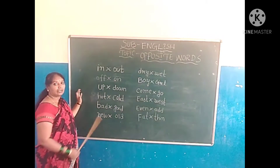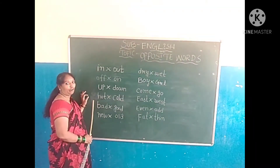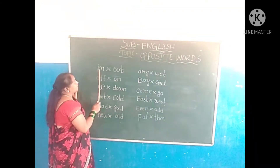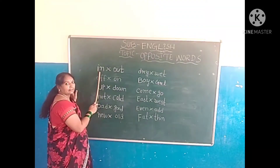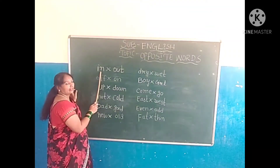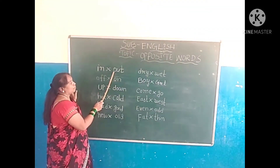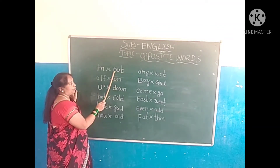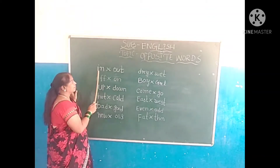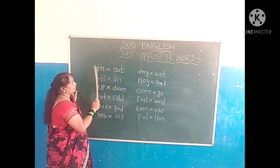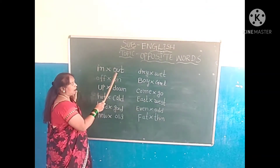Children, look here — all repeat along with me. I-N, in. O-U-T, out. I-N, in. O-U-T, out. In, opposite, out. In — out.